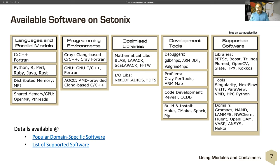The development toolkit includes familiar tools plus newer ones like Cray Perf tools, and ARM Forge, which provides debugging such as DDT. In terms of supported software, the list is far more extensive — we provide libraries for Boost, Trilinos, and Plumed. Tools include Singularity and Nextflow, plus some visualization tools and HPC Python. Domain-specific software includes GROMACS, NAMD, LAMMPS, FAST, and other systems heavily used by a wide variety of researchers.